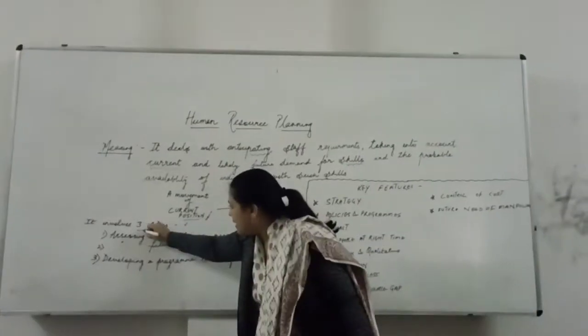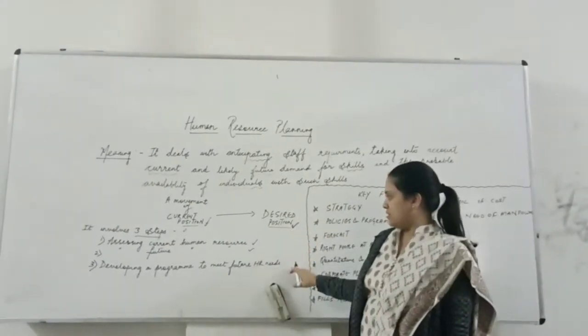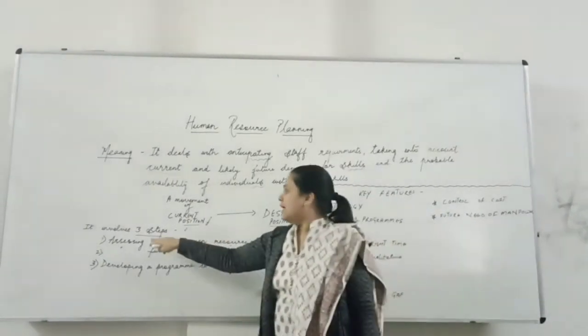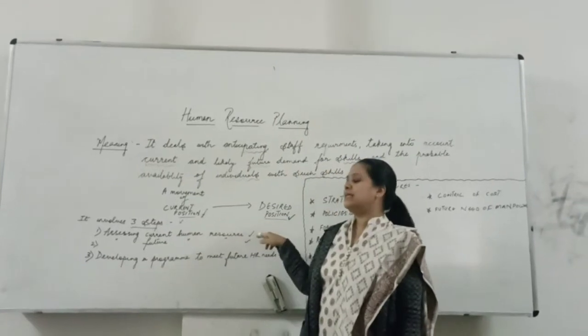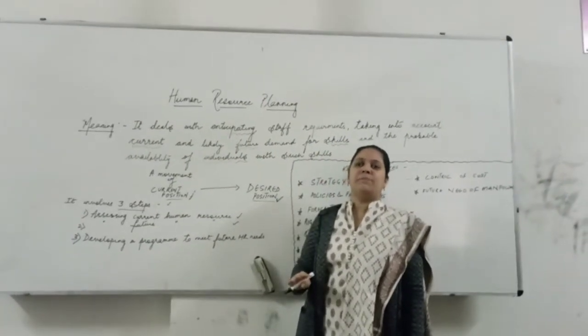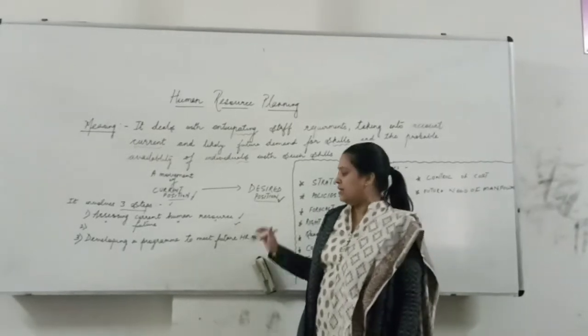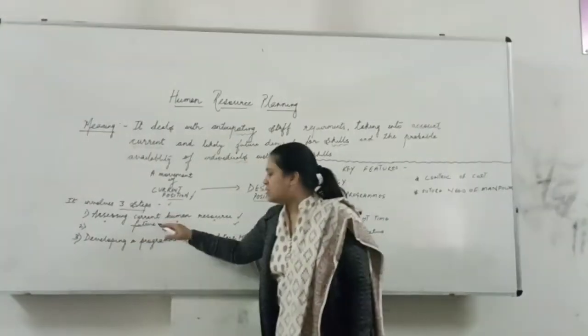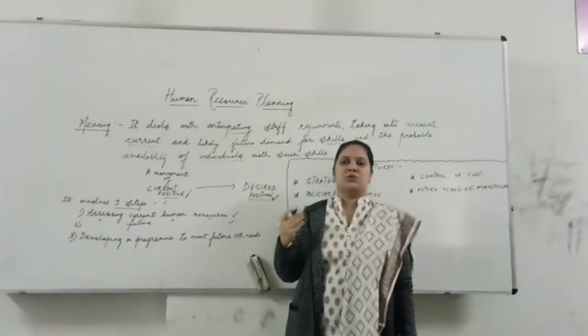There are three basic steps which are involved in this Human Resource Planning. First, you need to assess what is the current human resource. What number of people you have in your organization. Then you need to assess what is the future human resource.